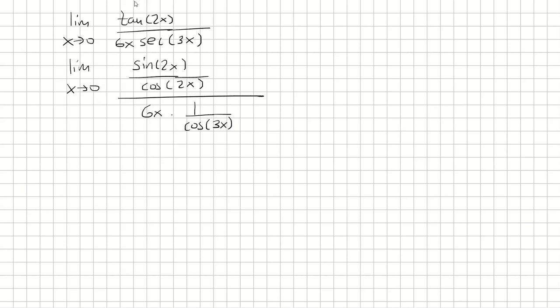And at this point we're going to rewrite this. We're going to have sine 2x times cosine 3x over cosine 2x times 6x.